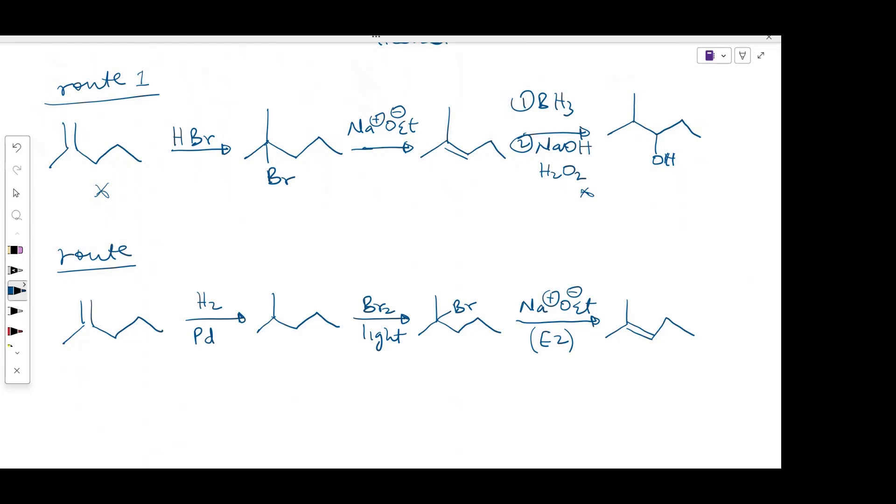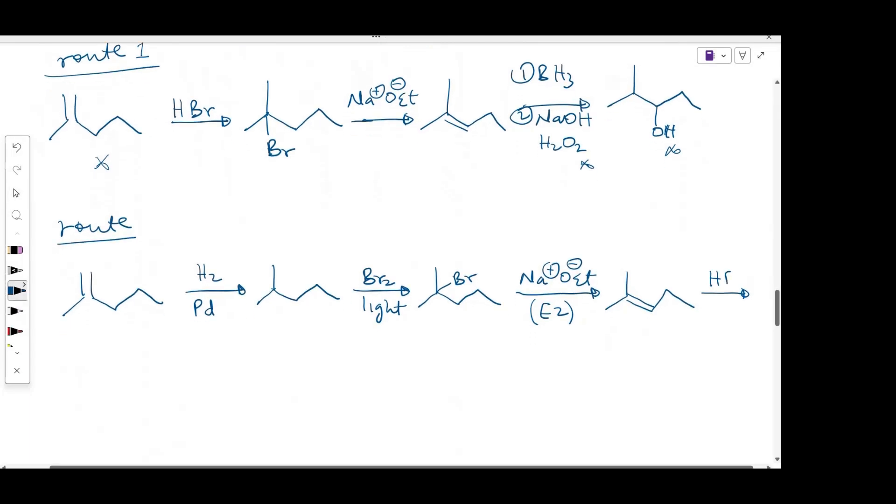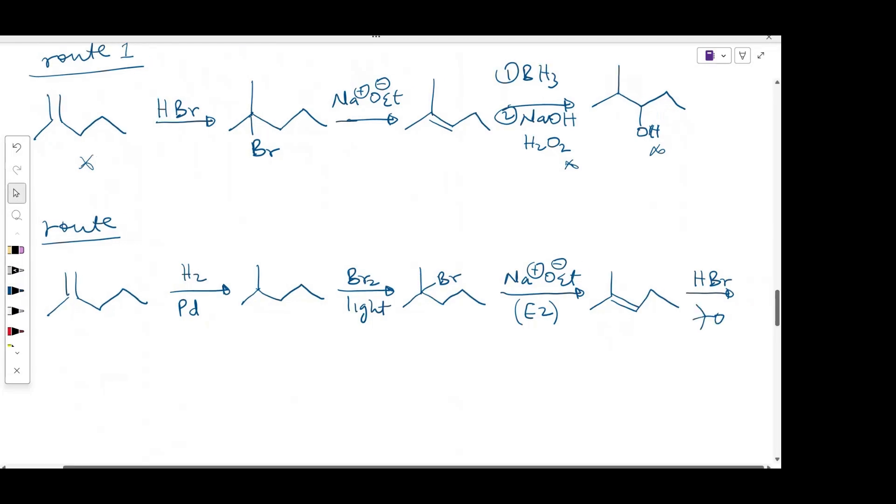And from the alkyl halide, I can do SN1 reaction to form the alcohol. So the question then becomes, what reagent can I use to add bromine to the less-substituted carbon and hydrogen to the more-substituted carbon? So this is anti-Markovnikov addition of hydrogen and bromine. So the reagent that will make this happen will be HBr. And I can use this radical initiator.